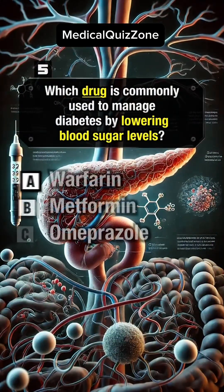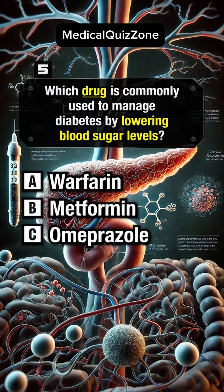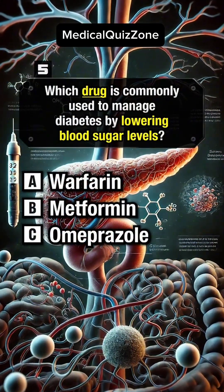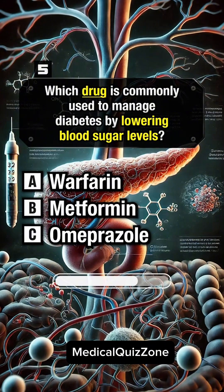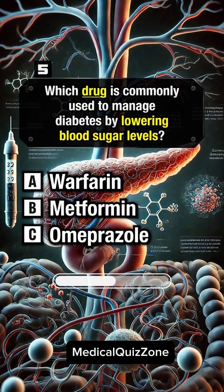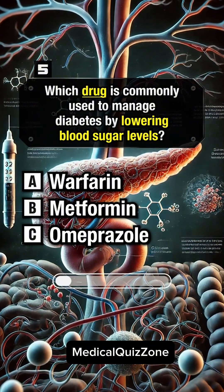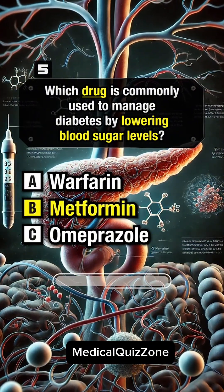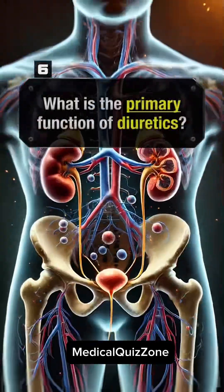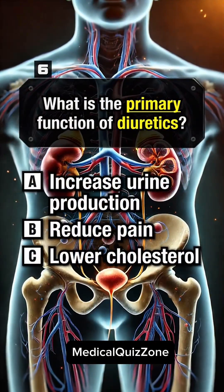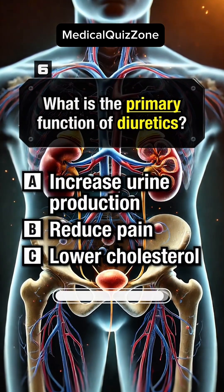Which drug is commonly used to manage diabetes by lowering blood sugar levels? Answer B: Metformin. What is the primary function of diuretics?